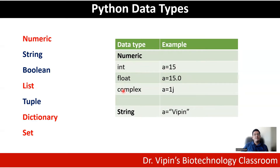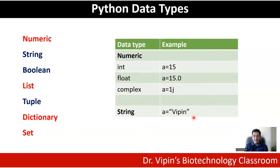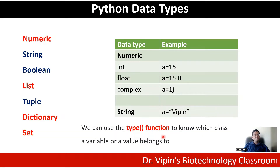Then you have the third type, which is the complex numeric data type — A equals 1j. And then finally you have the string data type, where anything enclosed within double quotes and assigned to a variable name becomes a string. So for example, A equals 'vpn' — vpn is a string here. We can use the type function to check which class a variable or value belongs to, and I'll demonstrate that as we move to the practical demonstration.